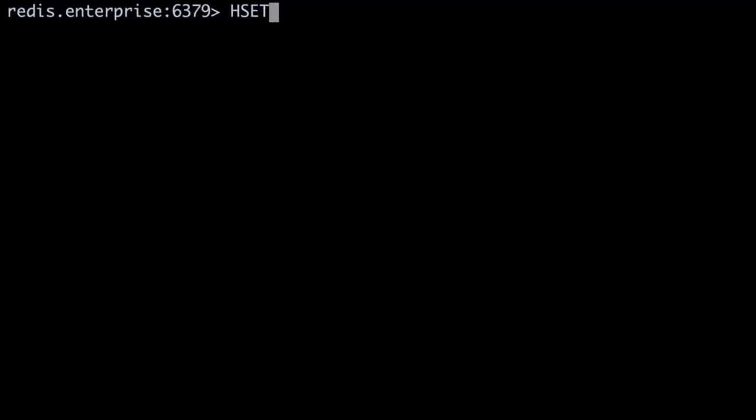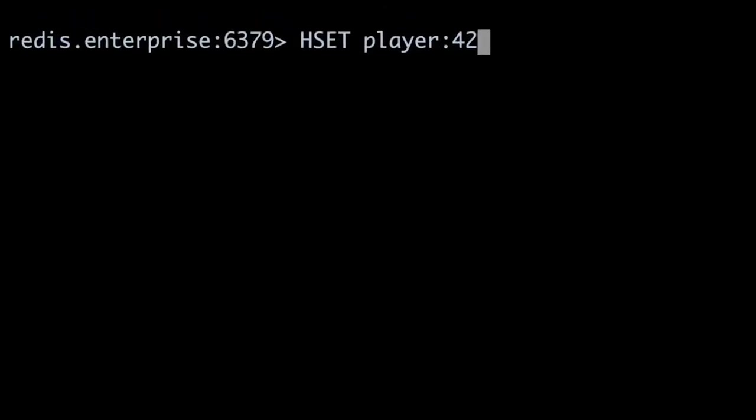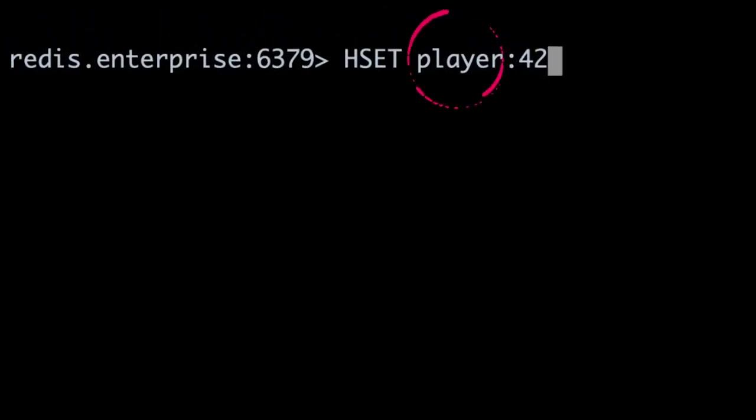The first argument to the hset command is the key name we'll use to access the hash. In this case, it's player colon 42. Here we're using a common Redis key naming convention. We start with the word player to indicate what type of thing we're storing. We then follow with a colon and the ID of this player. The colon separates the various parts of the key name, going from least specific on the left, to most specific on the right.